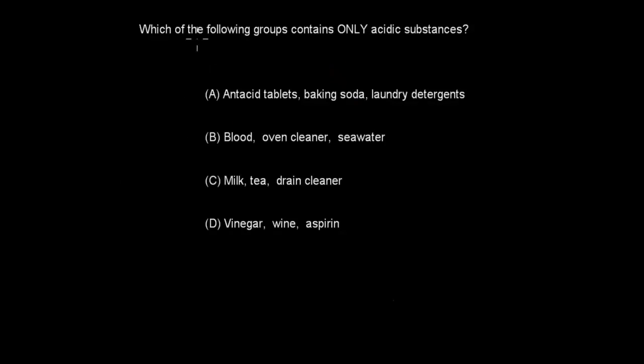Next question is, which of the following groups contain only acidic substances? A. Antacid tablets, baking soda, and laundry detergents. B. Blood, oven cleaner, and seawater. C. Milk, tea, and drain cleaner. D. Vinegar, wine, and aspirin. When you're ready, pause the video and attempt the question.